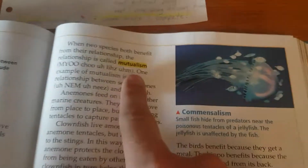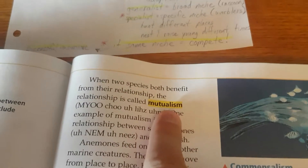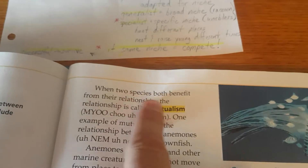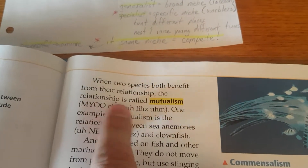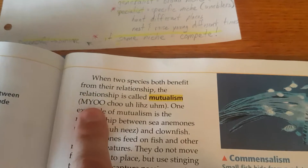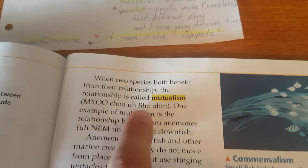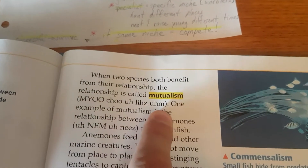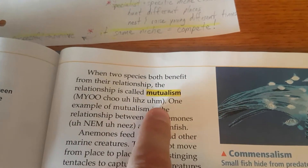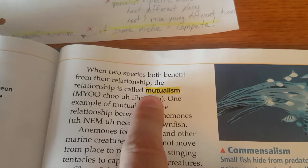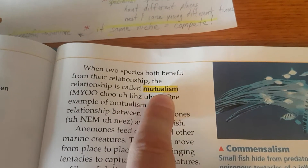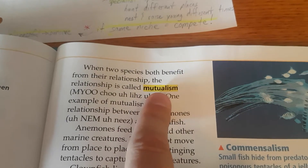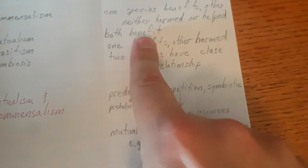Mutualism. Go back to the start of the sentence. When two species both benefit from their relationship, the relationship is called Mutualism. Look at the root word of that — Mutual, like a mutual benefit. Both benefit. So, Mutualism: both benefit.